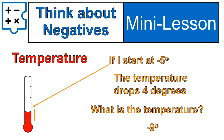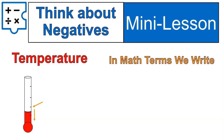Negative 9 is less than negative 5. Just remember that — we've done this on number lines, but it's good to think about it as well. Even though the number itself, 9, is bigger than 5, when working with negatives, that means the number is less. Negative 9 is a lower temperature than negative 5. In math terms, we would write it as: negative 5 minus 4 equals negative 9 degrees.